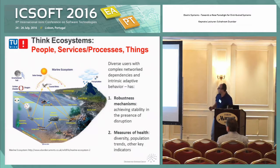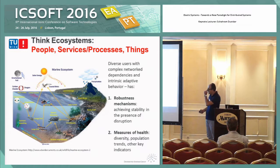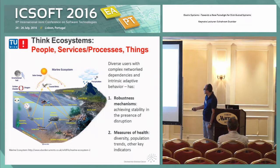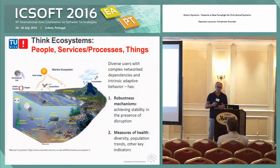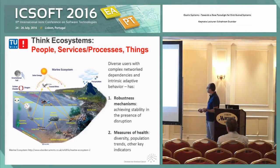When we think in ecosystems, I like to use one example from nature: the marine ecosystem depicted here. You can see that you have these different building blocks. In this case, it's the sun emitting solar energy, and you have different players in the natural habitat. All of these together build a complex network system with dependencies and adaptation — they have adaptive behavior. Whenever you have adaptive behavior to a particular situation, you have to think about robustness: how can you achieve stability in the presence of any disruption?